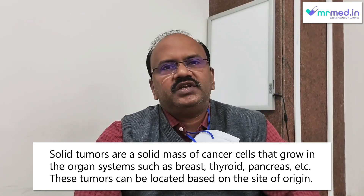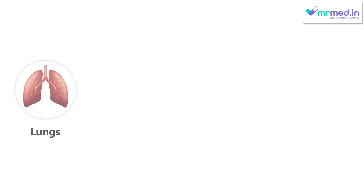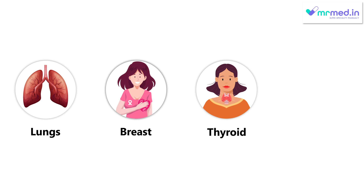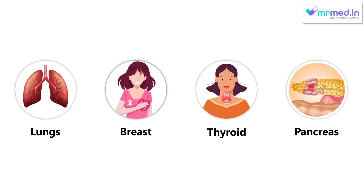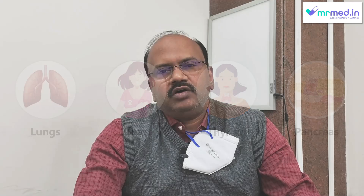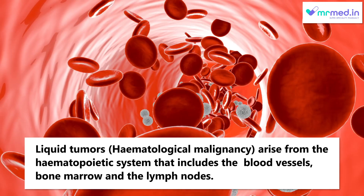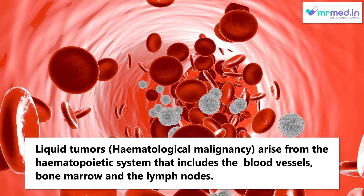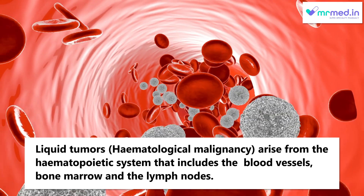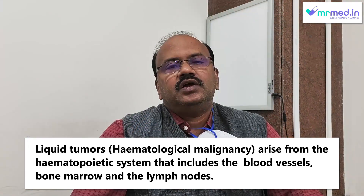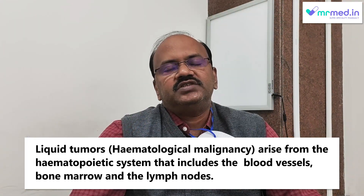For example, it can arise from the lung, breast, thyroid, pancreas, or any of the bone tumours. Whereas hematological malignancy, if it arises, it arises throughout the body in the hemopoietic system.